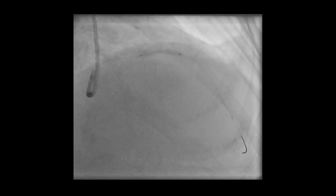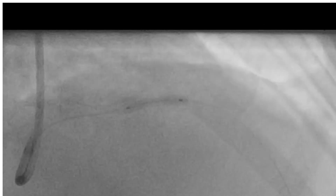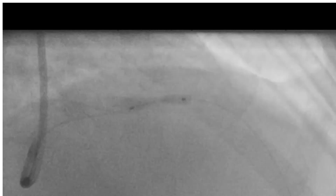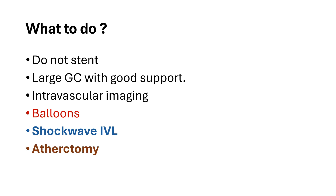Pre-dilatation was done using NC balloon 2.5 by 20, and then 2.75 by 15 to high pressure. There was still waist at the mid-part of the balloon, presenting a balloon undilatable lesion. We have a short video on this topic. In short: it is preferable not to stent immediately; use a large guide catheter with support, intravascular imaging, and then special balloons like cutting balloon, scoring balloon, and possibly shockwave intravascular lithotripsy or atherectomy.